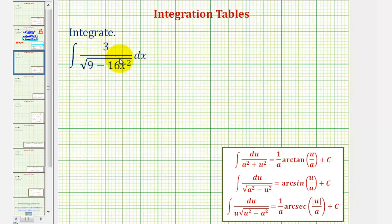We want to find the integral of three divided by the square root of the quantity nine minus 16 x squared, integrated with respect to x.